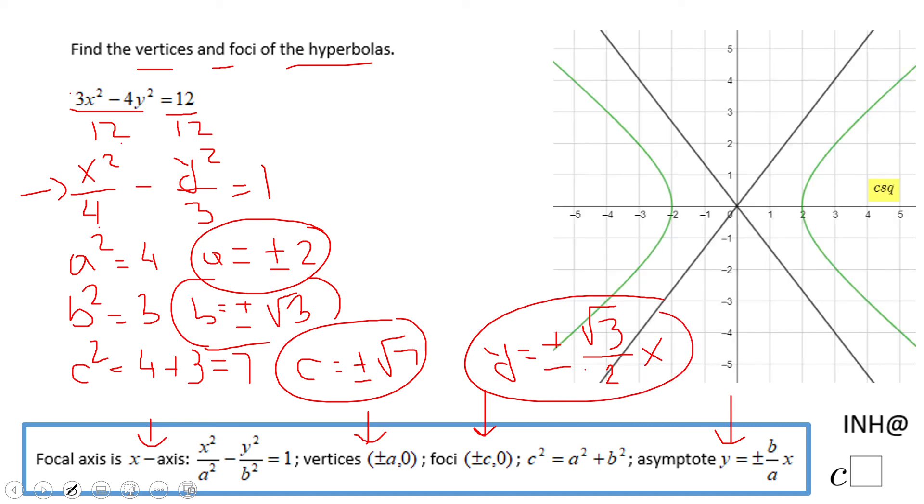And you can see the graph right here. Like I said before, the vertices right here at plus and minus 2, 0. The foci is plus and minus square root of 7, 0.